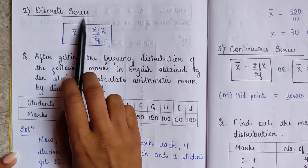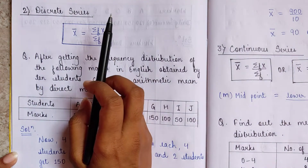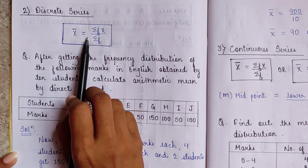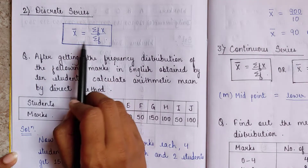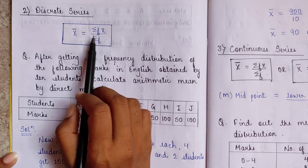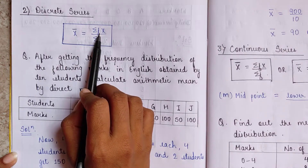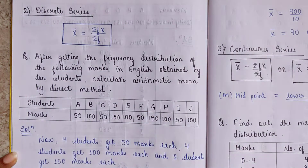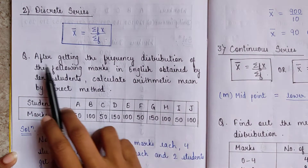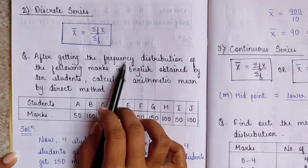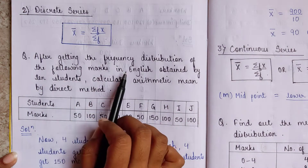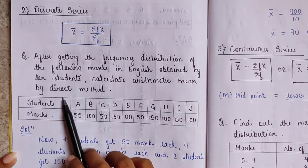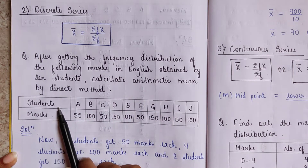Now for discrete series, we use the formula: mean = ΣFx / ΣF, where F is the frequency. Question: given the frequency distribution of marks in English obtained by 10 students, calculate the arithmetic mean by the direct method.